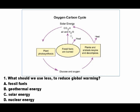Number one question is about the chart here at the top, about the oxygen and carbon cycle. The question is: what should we use to reduce global warming? Is it A) fossil fuels, B) thermal energy, C) solar energy, or D) nuclear energy?